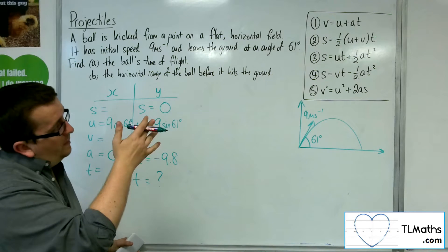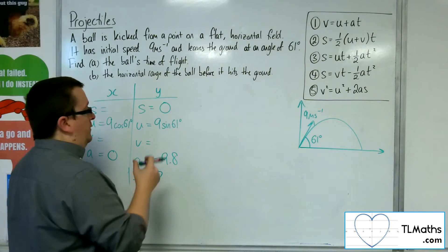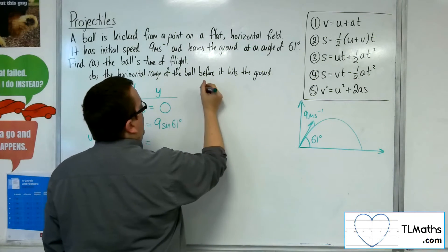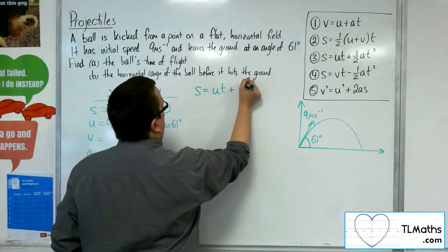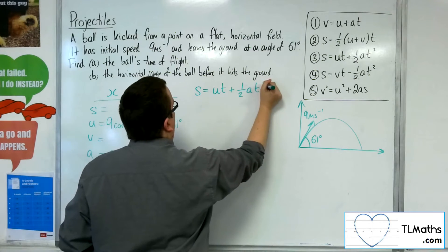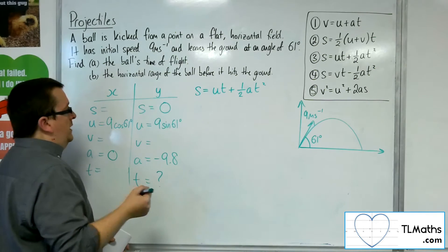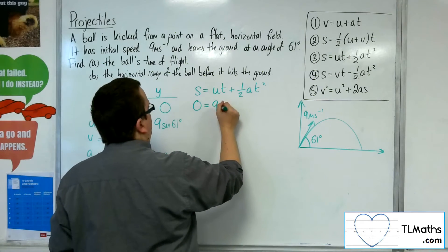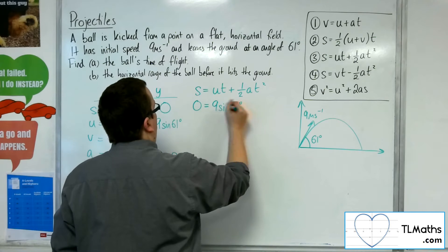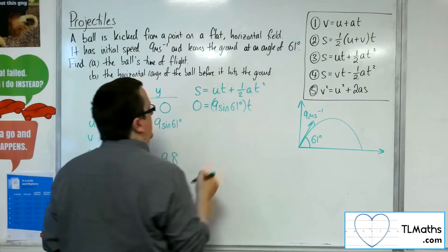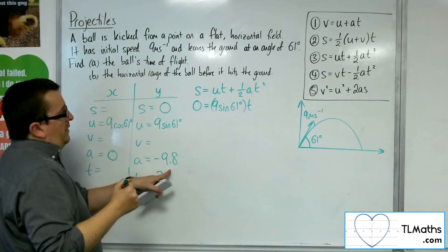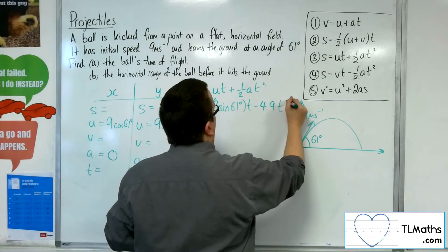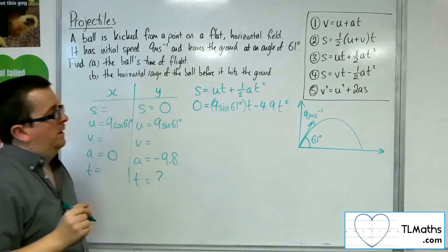So I'm going to go with number 3 here to find T. So number 3, we've got S equals UT plus 1 half AT squared. Now the S is 0. The U is the 9 sine 61. And I don't know T. The A is minus 9.8. Half of that is minus 4.9, so minus 4.9 T squared.